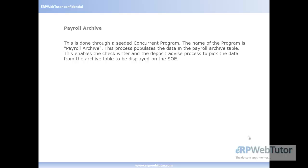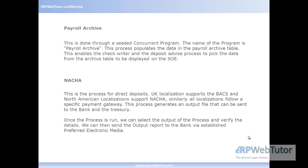Moving on to the next step, which is the NACHA. This is the process for direct deposits. UK localization supports the BACS and the North American localization supports NACHA — the North American clearinghouse. Different locations follow different payment gateways. The company processes the payroll and then the money coming from XYZ company needs to get distributed to its different employees and deposited in their banks. In the North American localizations, we normally use NACHA as a clearinghouse to make this direct deposit.